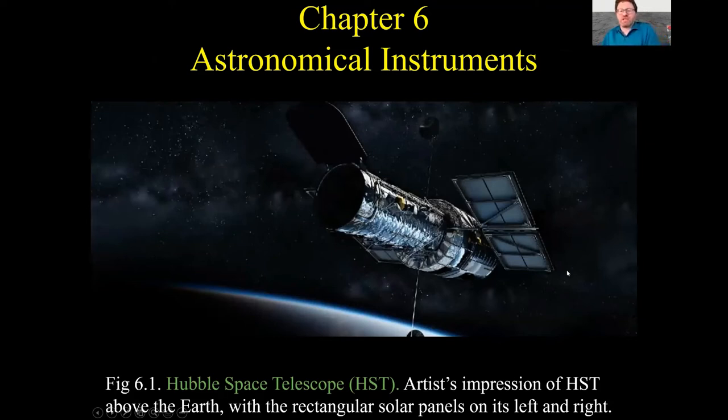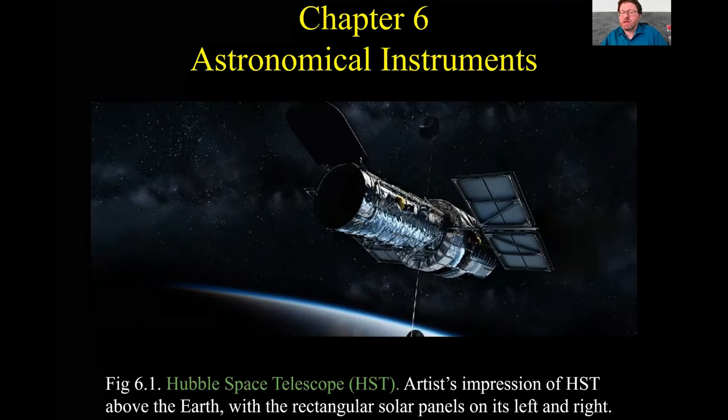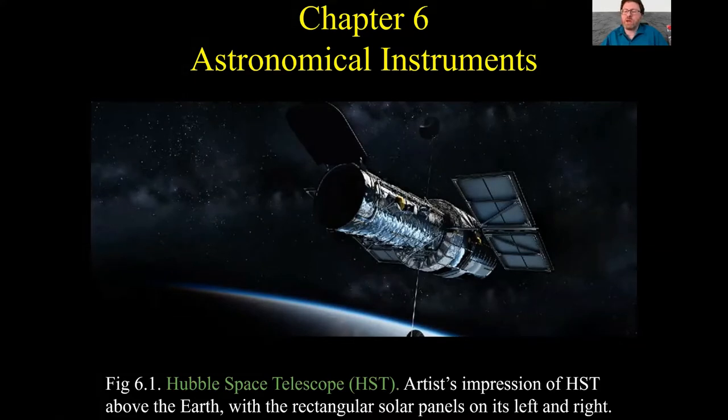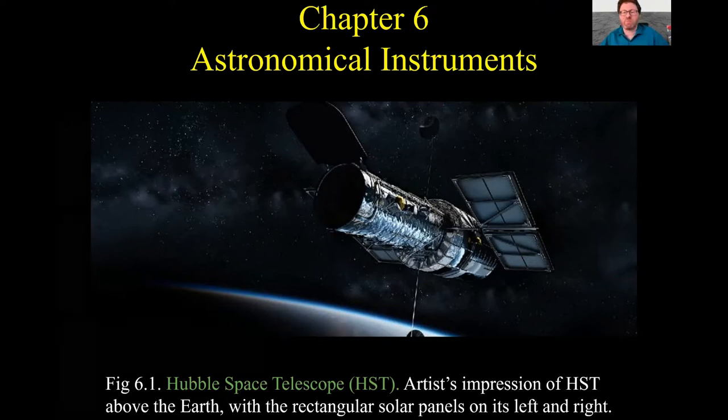We're going to move on to Chapter 6 here to talk about telescopes and, more generally, astronomical instruments. Here's an image, an artist's impression of the Hubble Space Telescope. It's got solar panels to keep it going. It's been running for more than 25 years now. It's still doing great work. It's outlived its hardware expectation.